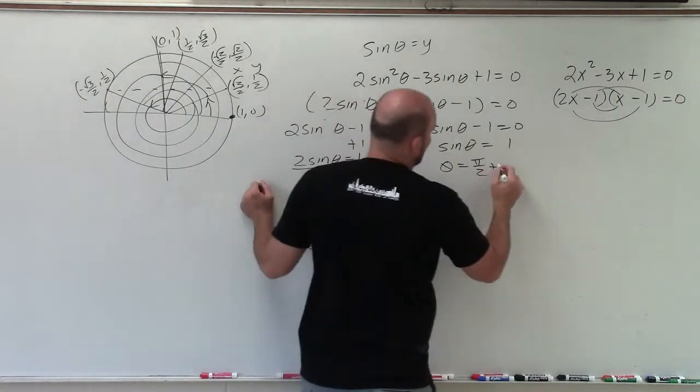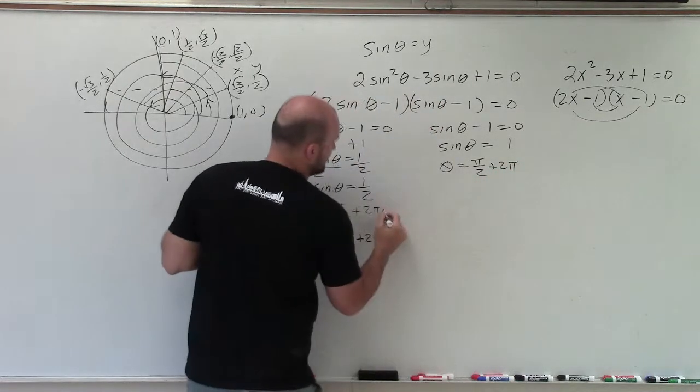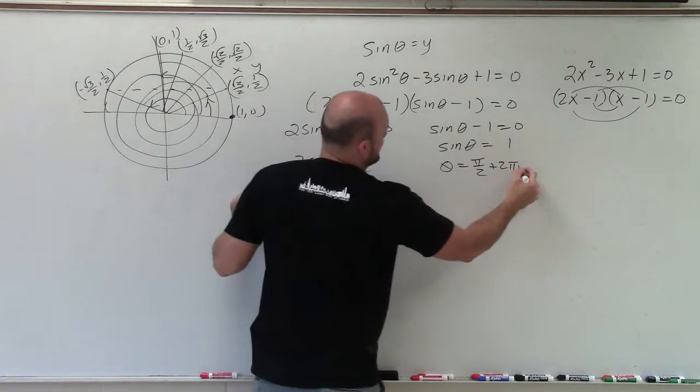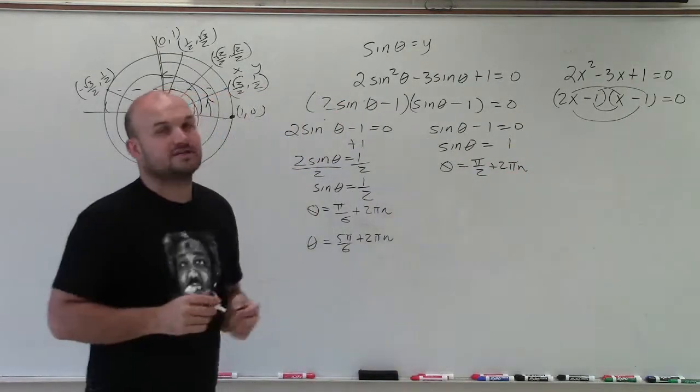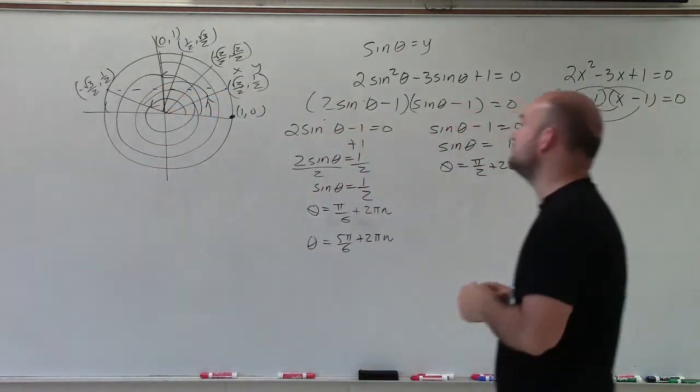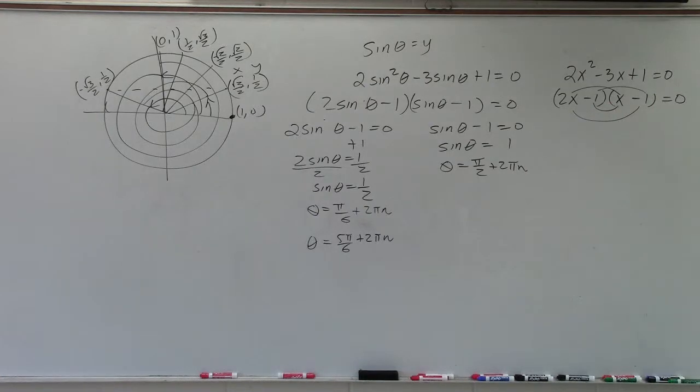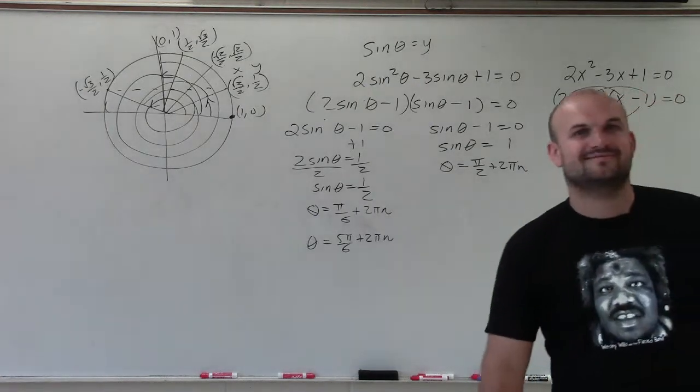And I can add 2 pi as many times as I want. So rather than just writing 2 pi once, I'm going to use a variable that's going to represent infinitely many revolutions. So there you go, ladies and gentlemen. That is how you solve your trigonometric equation. Thanks.